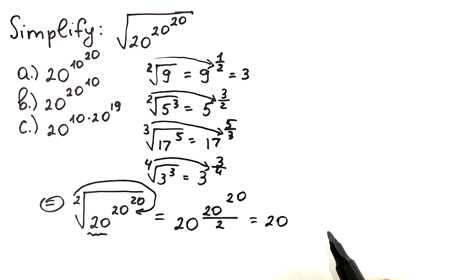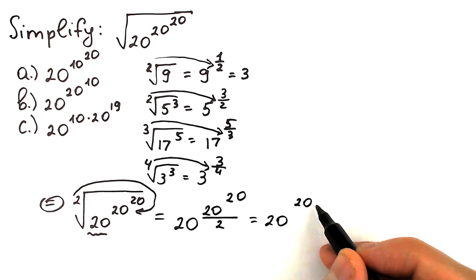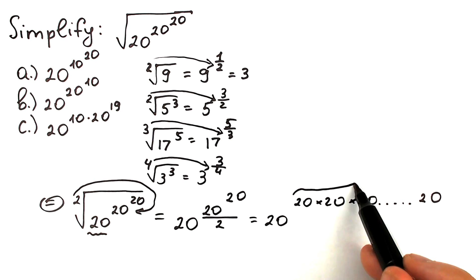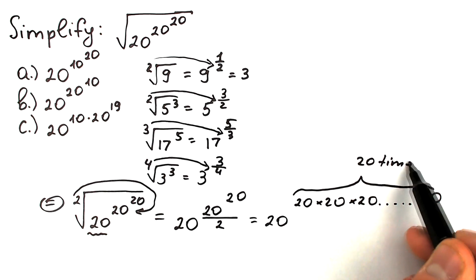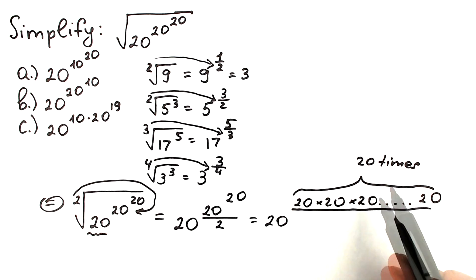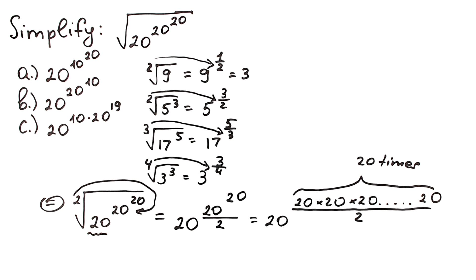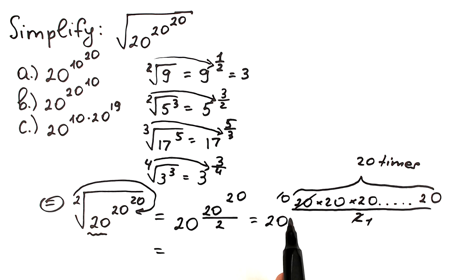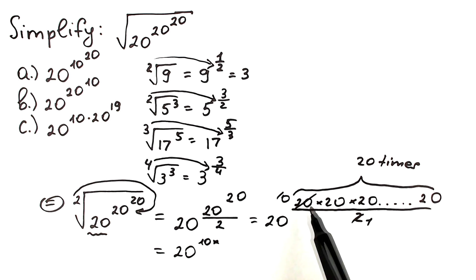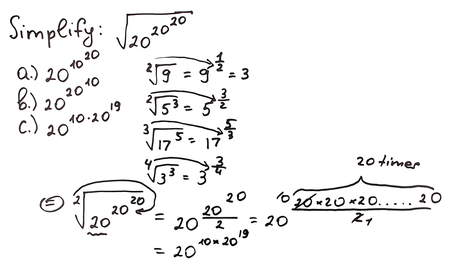So now we have base 20, and the exponent is 20^20 divided by 2. Now, 20^20 means 20 multiplied 20 times. Dividing by 2: we cancel one 20 with the 2 — 20 divided by 2 gives 10 — so we reduce the count by one, leaving 19 remaining 20s. Therefore the result is 20 to the power 10 times 20 to the power 19. This is the correct answer.